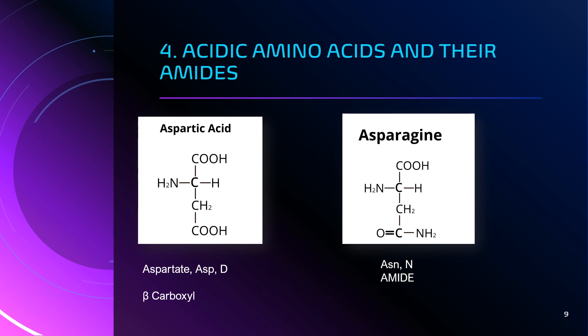From the structure, the alpha carbon has hydrogen, amino group, and carboxylic acid attached. Aspartic acid has an extra carboxylic group, giving it an acidic property. It is also called aspartate. The three-letter code is ASP and the single-letter code is capital D. The extra carboxyl group is attached to the beta carbon, which is why it is said to have a beta carboxyl group.